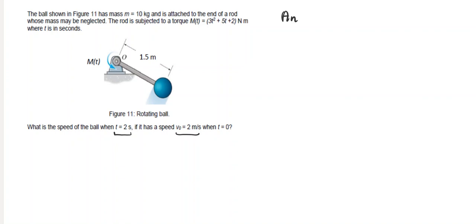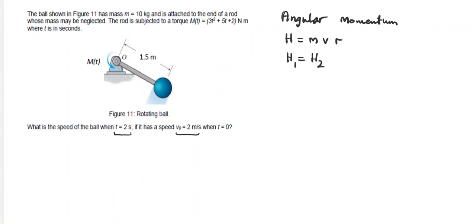This is an angular momentum question. By definition, angular momentum is H equals m times v times r — mass times velocity times distance. We need to find the angular momentum at stage one, at t equal to zero seconds, and at t equal to two seconds. So H1 should be equal to H2: m·v·r at t equal to zero is equal to m·v·r at t equal to two seconds.